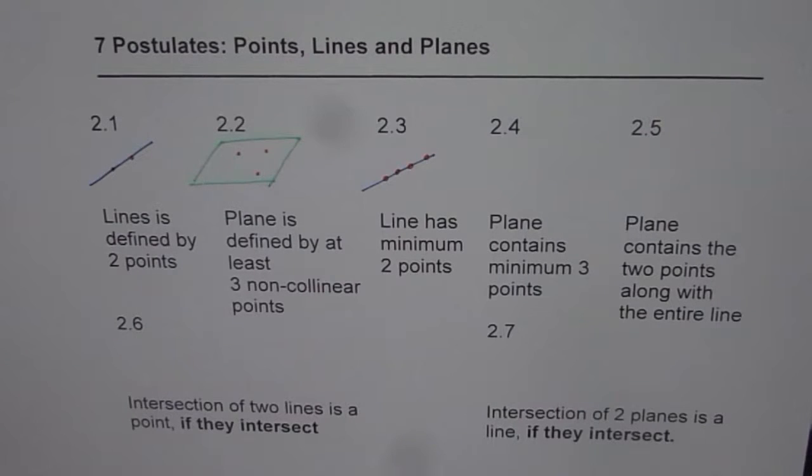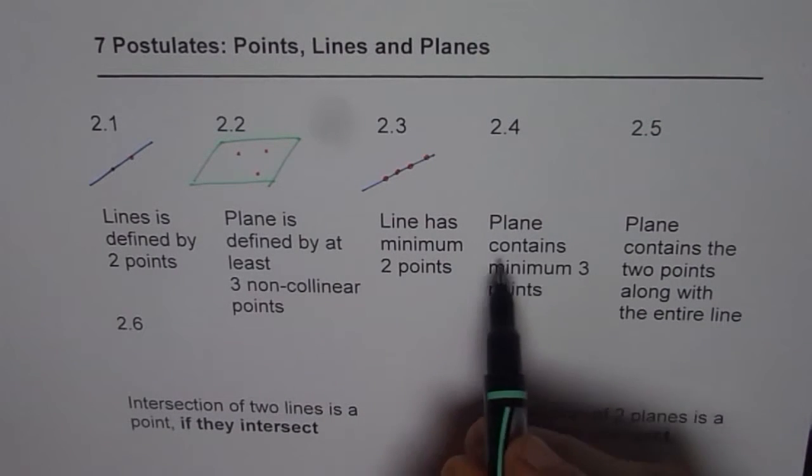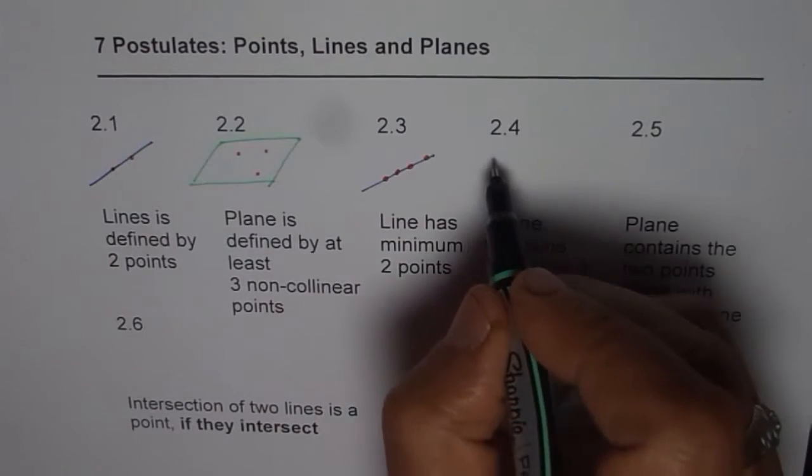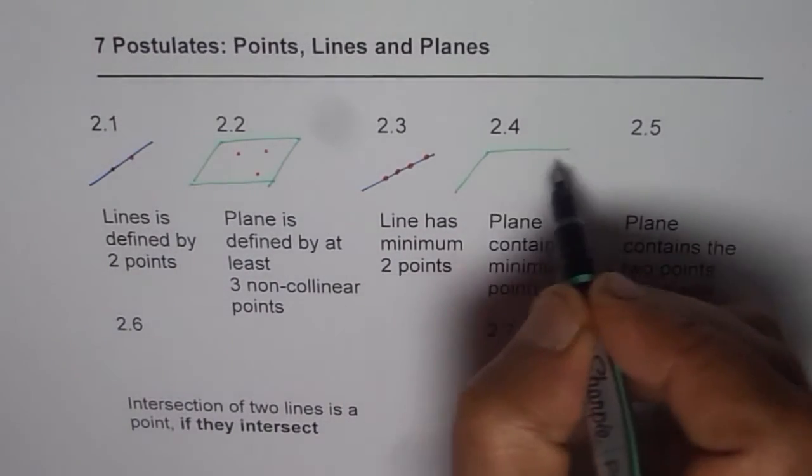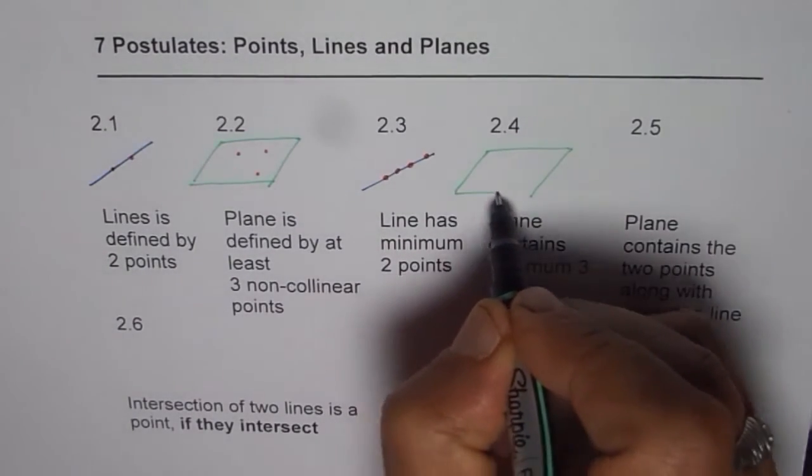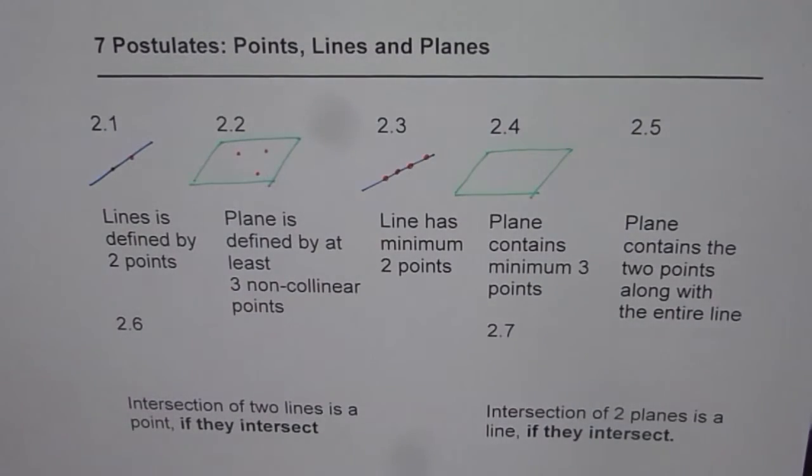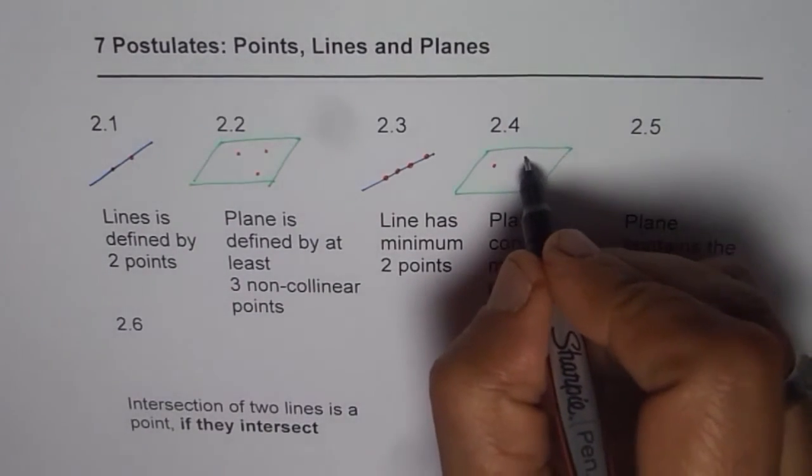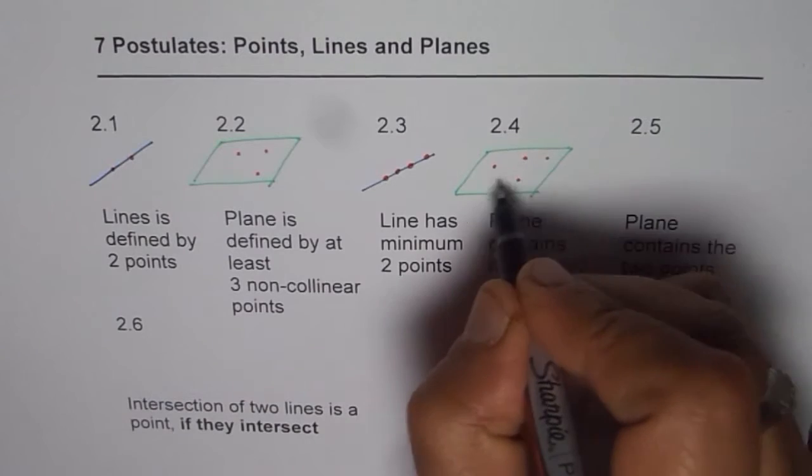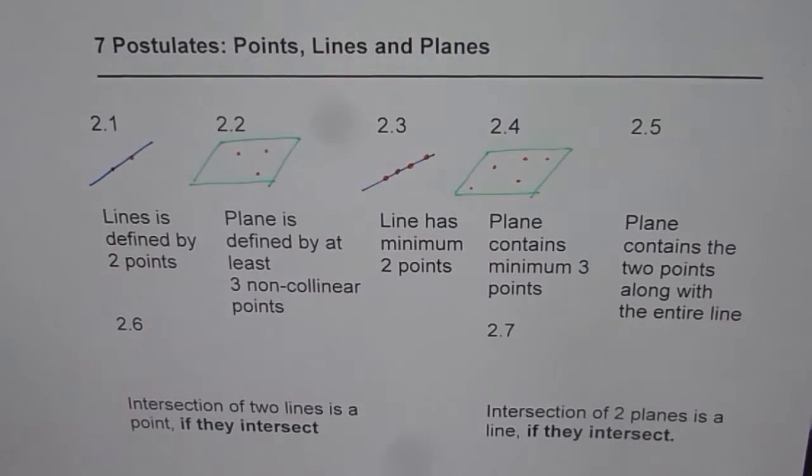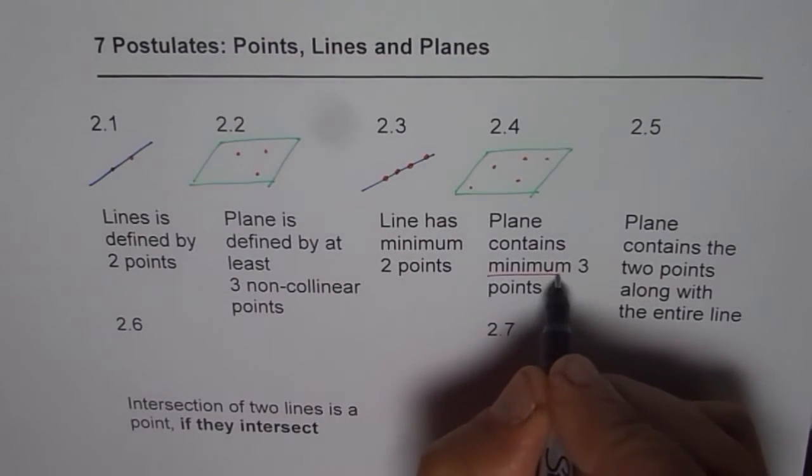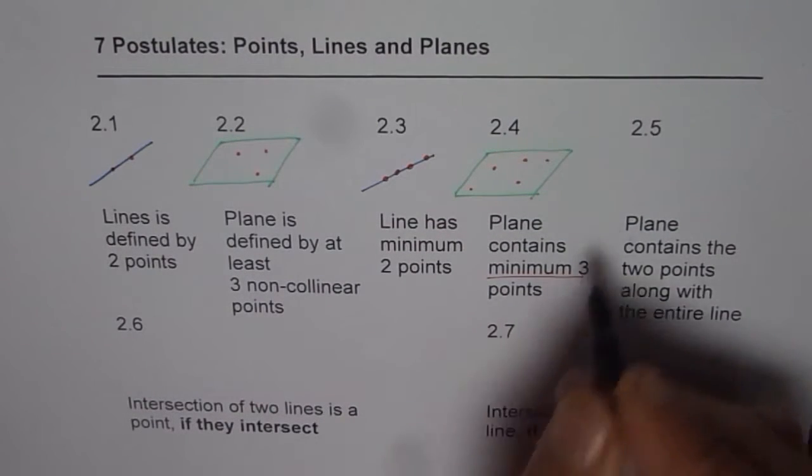Now the next one is that a plane contains minimum three points. So if we have a plane then in that plane we will have at least three points which basically define the plane. But there could be other points also. But remember one thing, plane contains minimum three points so that is what it is. It can have much more.